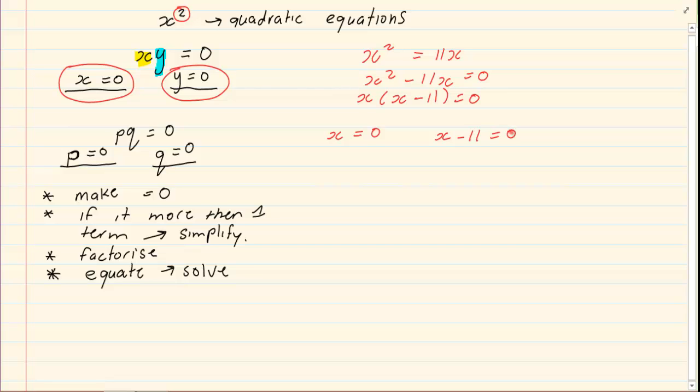Once you equate it to 0, if you need to solve, you need to continue. So here I'm going to say x is equal to 11. At this stage, it is a linear equation. Once you equate it and you solve, you are busy with linear equations. Let's do the following example.